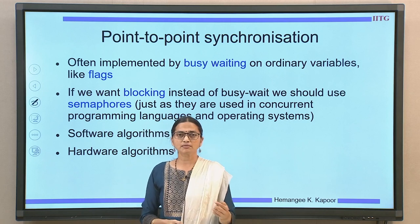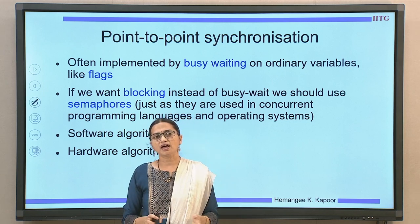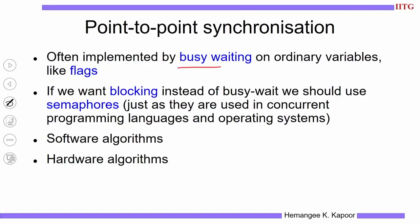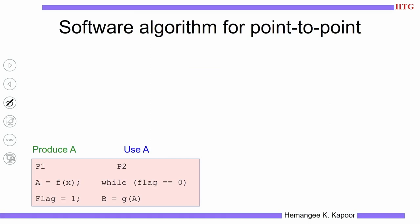Semaphores fall under the same class of point-to-point synchronization. They can be implemented using busy waiting on flags, or if we want to implement blocking instead of busy waiting — that is, the process is blocked and moved out of the processor, waiting to be triggered in future — we can use semaphores for that. This can be implemented both using hardware as well as software algorithms.